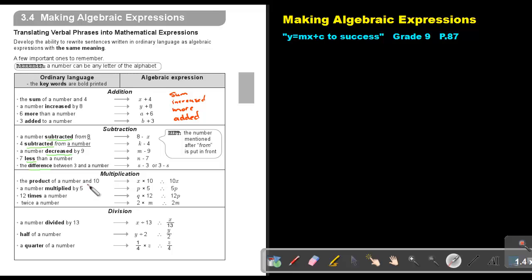Let's look at multiplication. The product of a number and 10, remember product is multiply, so it's x multiplied 10. A number multiplied by 5, so that number, any alphabet letter number, multiply 5, and usually we write it as first the number, then the variable. So 10x, 5p. 12 times the number, so it's q times 12, so it's 12q. Twice a number, so it's 2 times m or 2m. That's all for multiplication. So it's product, multiplied, times, twice.